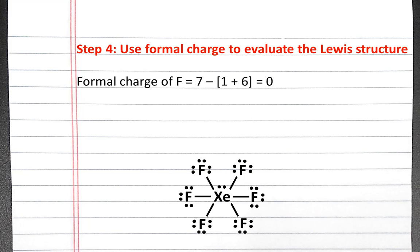For each of our seven fluorine atoms, the formal charge of fluorine is equal to seven valence electrons in a neutral atom, subtract one bond plus six lone pair electrons, which is equal to zero.